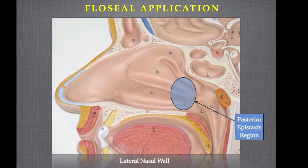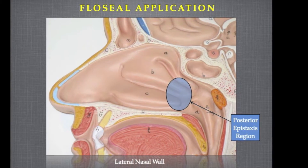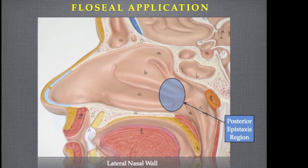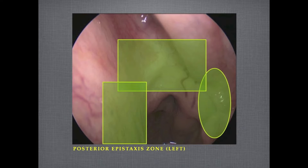Here on a model, you can see on the lateral wall the region from which posterior epistaxis usually originates. On these endoscopic images, you can see the posterior nasal cavity, and highlighted again are the zones where posterior epistaxis most commonly occurs.